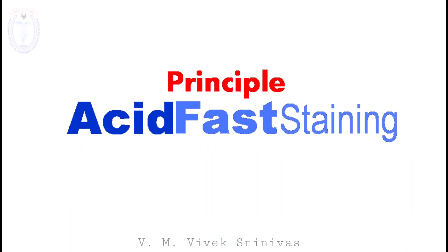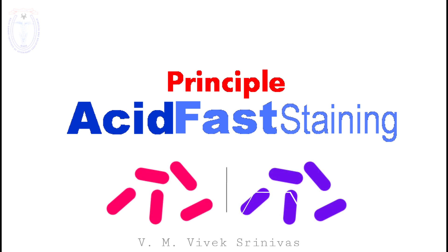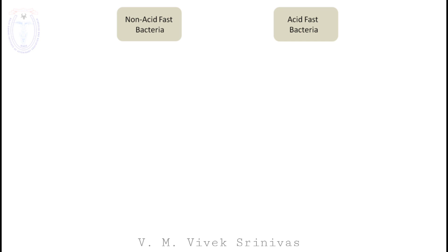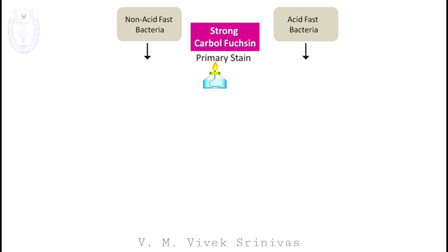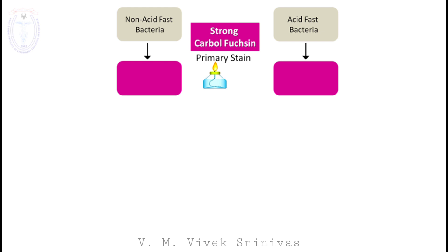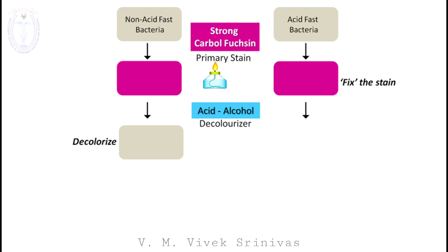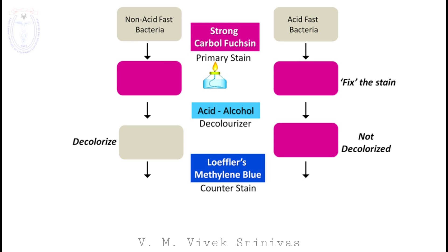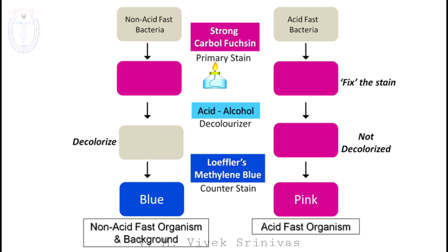Coming to the principle behind the acid fast staining technique. This technique differentiates the bacteria based on their coloring property. Once the bacteria are treated with the strong carbol fuchsin — the primary stain — along with heat treatment, it gives a pink color to both bacteria. But only the acid fast bacterium fixes the primary stain. When the acid alcohol is added — this is the decolorizer — it decolorizes the primary stain easily from the non acid fast bacteria. But the acid fast bacteria retain the primary stain. Lastly, on use of the counter stain — Leffler's methylene blue — that gives blue color to the non acid fast bacteria and to the background.